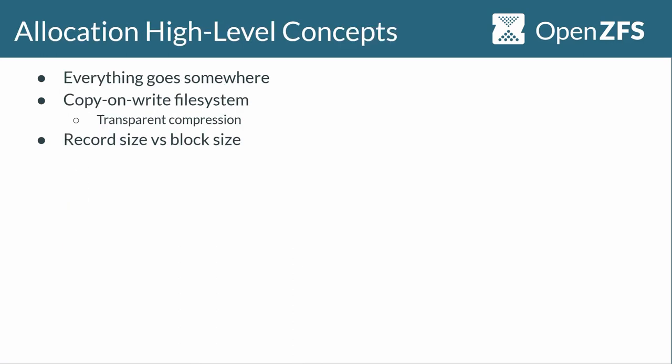An important rule in file systems as in life is that everything goes somewhere — all your data blocks, indirect blocks, file data, and metadata have to have a place on disk. ZFS is a copy-on-write file system. Traditional file systems are update-in-place: when you modify data you rewrite it in the same location. ZFS, being copy-on-write, never overwrites data in place; it always writes data to a new location.